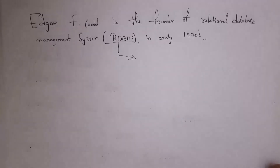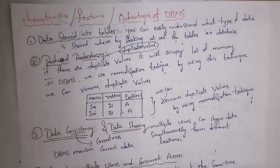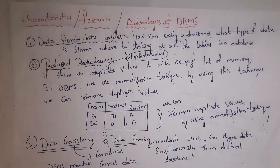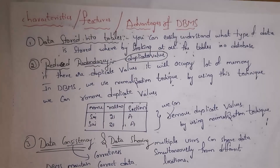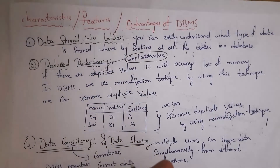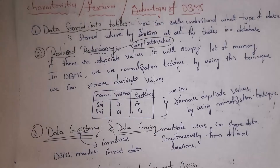Next I will explain characteristics, features, and advantages of DBMS. DBMS is a software — for example, MySQL. Using it, we can create a database, insert tables, and perform various operations. The first feature is that data is stored in tables. Showing data in table format makes it very easy to understand — by looking at the table you can easily identify what type of data is stored.